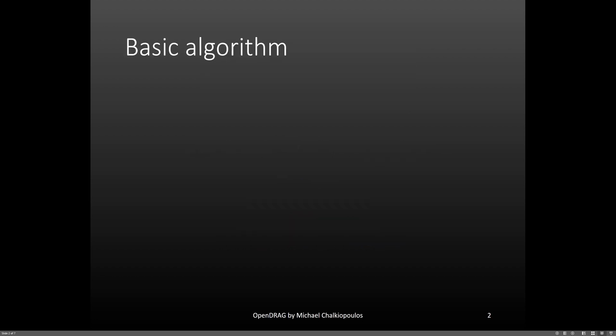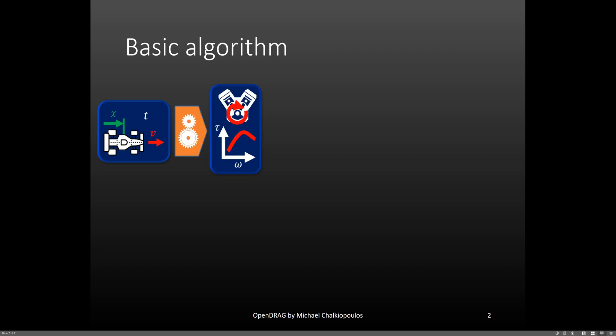Let's start with what OpenDrag does. OpenDrag simulates a vehicle in a straight line to estimate its performance in acceleration and braking. Let's assume that in time t, a vehicle is at point x with a forward velocity v and in a specific gear, and let's say it is trying to accelerate. Because we know everything we need for this vehicle, we can use the drivetrain model to get the engine speed. With the engine speed known, we can use the engine torque curve to get the torque output.